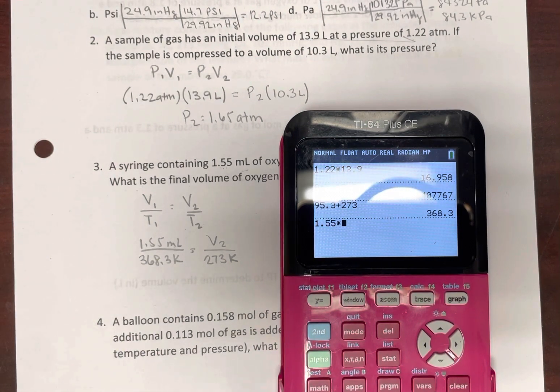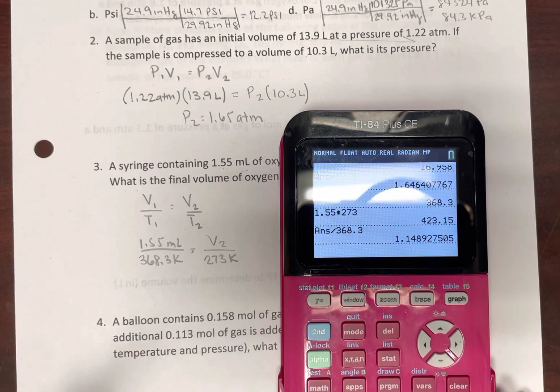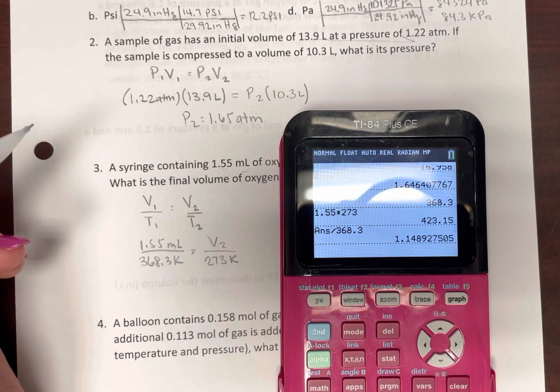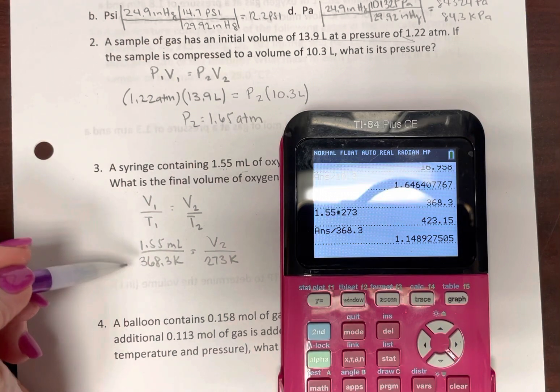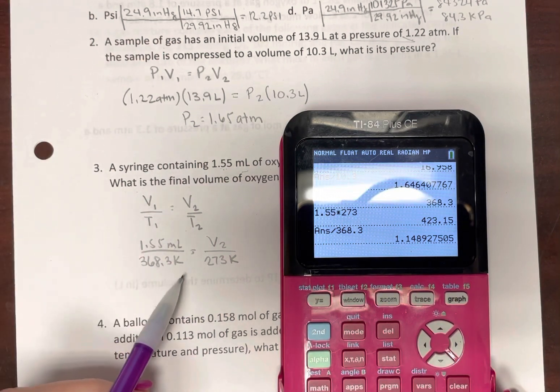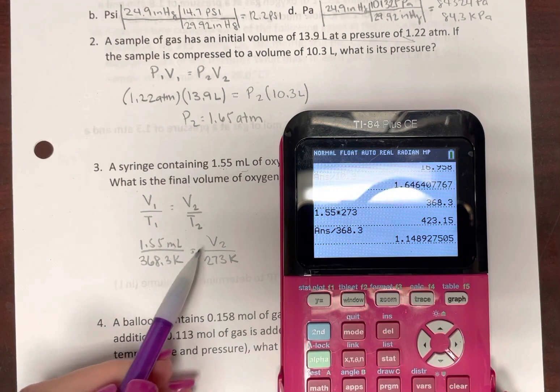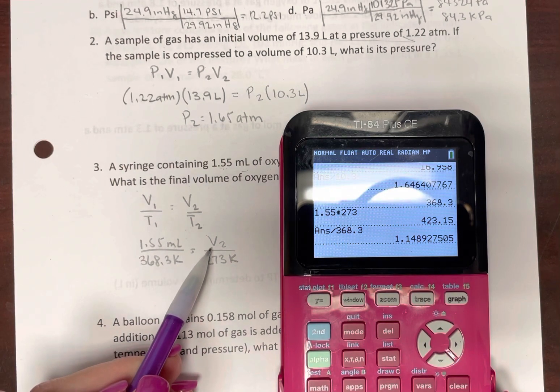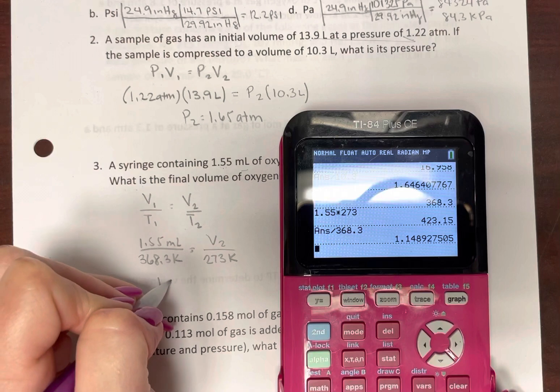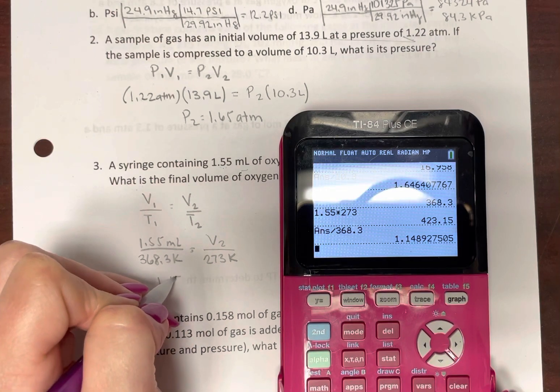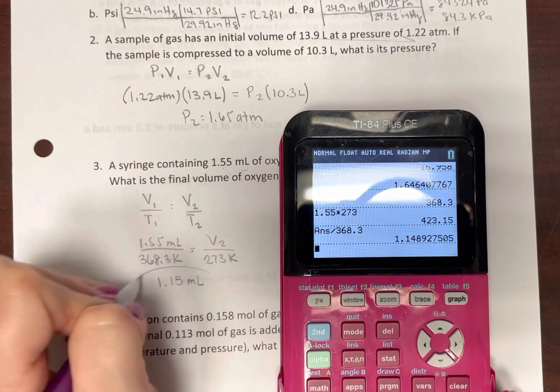Okay, cross multiply: 1.55 times 273, divided by 368.3. Alright, so temperature went down, and volume went down. Good, 1.15 milliliters. Alright, now let's look at this next one.